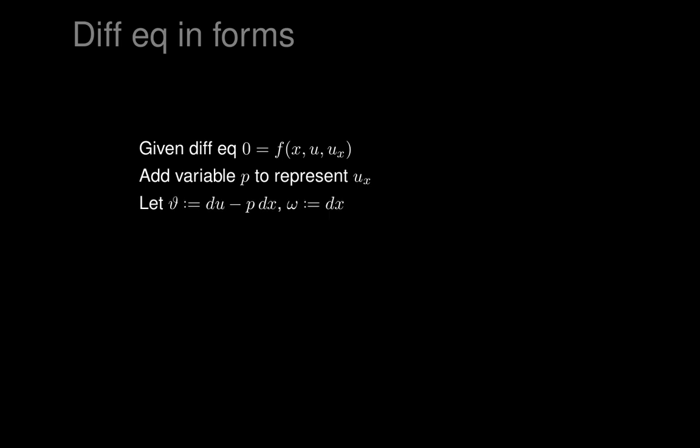Let theta be du minus p dx, and let omega be dx. So we have differential forms in the variables x, u, and p. In the three-dimensional space parameterized by x, u, and p, we let M be the subset of points at which f(x, u, p) vanishes. We'll assume it's a manifold — this is a technical issue, but it won't happen in the examples we want to deal with.